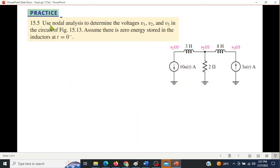The problem says use nodal analysis to determine the voltages V1, V2, and V3. This is the circuit. You can see there are two inductors, one resistor, and two current sources. This point is V1, this is V2, and this is V3. So we have to find these three voltages.